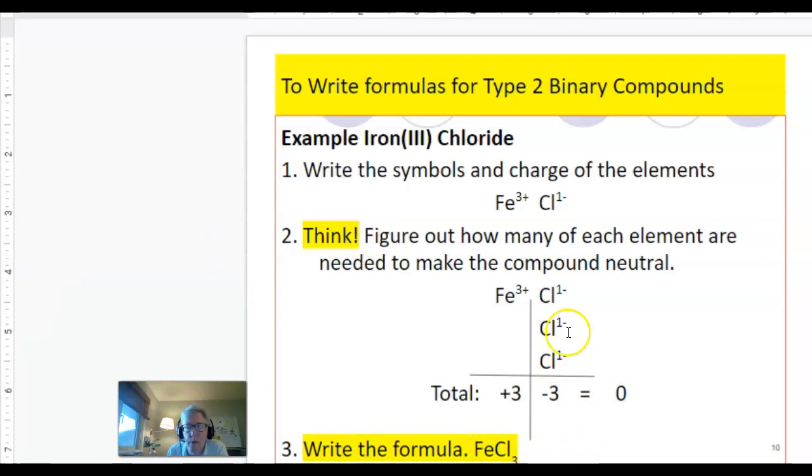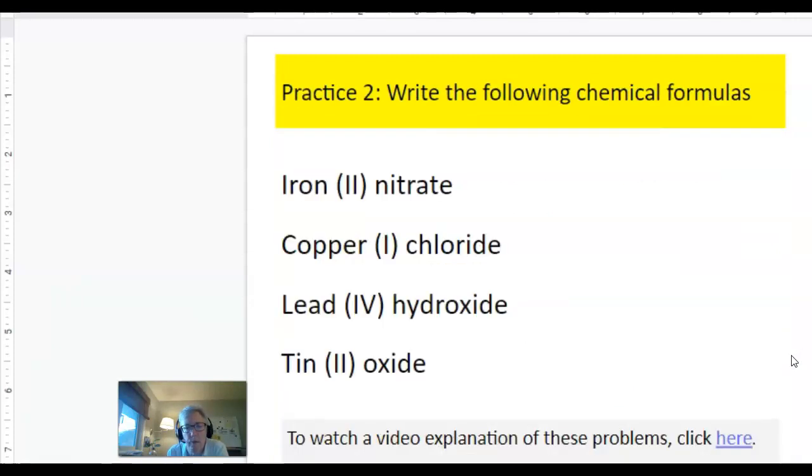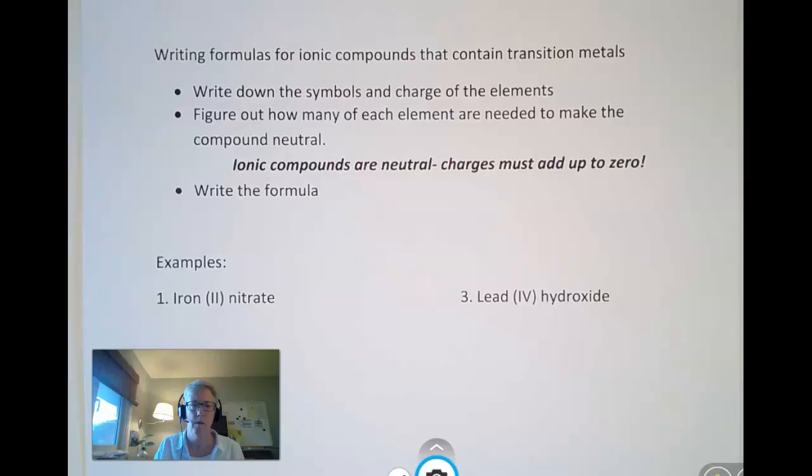So personally, I think it's a little bit easier to go in this direction and come up with the formula. When you have to come up with the name, the tricky part is to just remember to put in your Roman numeral. And again, having a transition metal should send off some big bells in your head, hopefully. So let's do a few practice problems. And again, I'm going to switch over to my camera so that I can write these out.